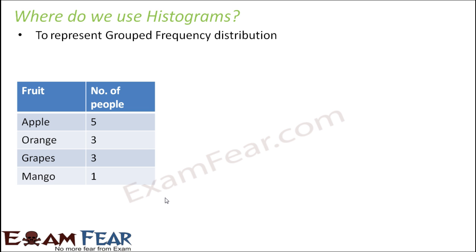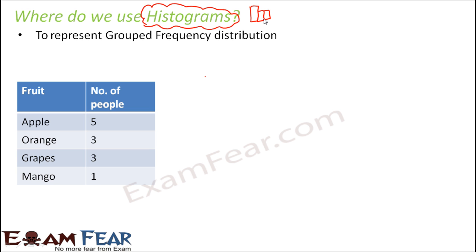Another interesting term used for these rectangular bars of bar graphs is histograms. Histograms are nothing but the rectangular bars of a bar graph. When we draw a bar graph, we are drawing rectangular bars — and those rectangular bars are called histograms.